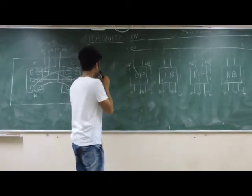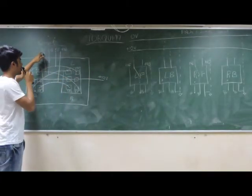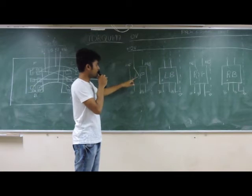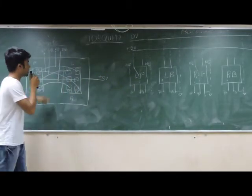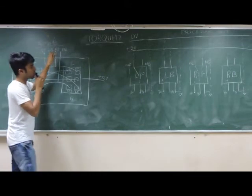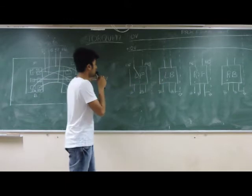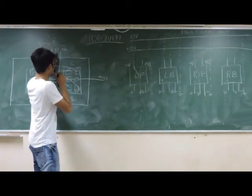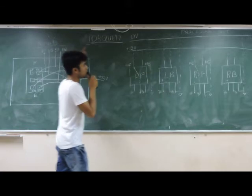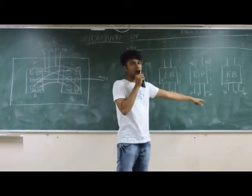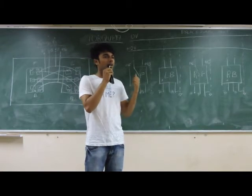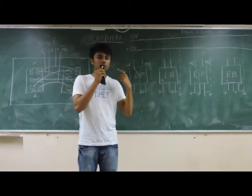Now we take the individual outputs from the remote — left forward — and connect it to the relay input marked as left forward. Then we take the left backward command to the input of the relay marked as left backward. Similarly we do this for right forward and right backward, connecting each wire to the corresponding relay input. This way we have connected our input with the processing unit.